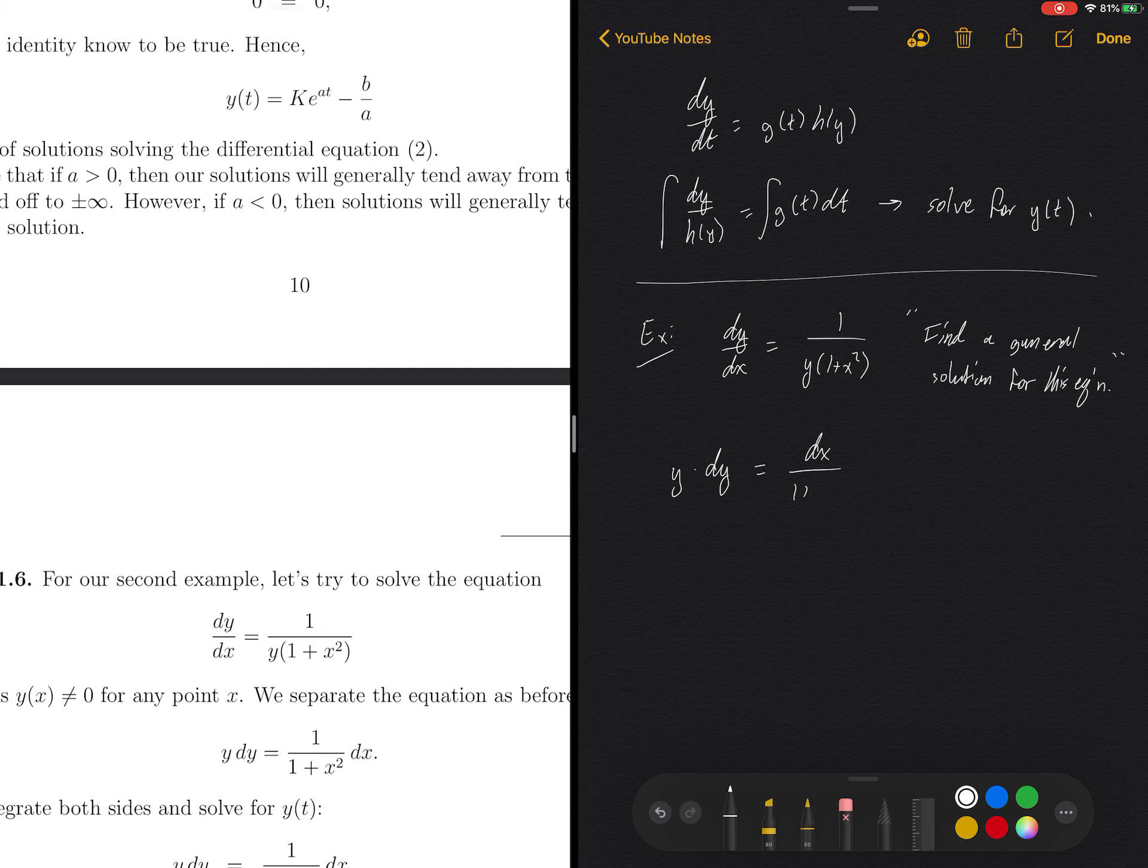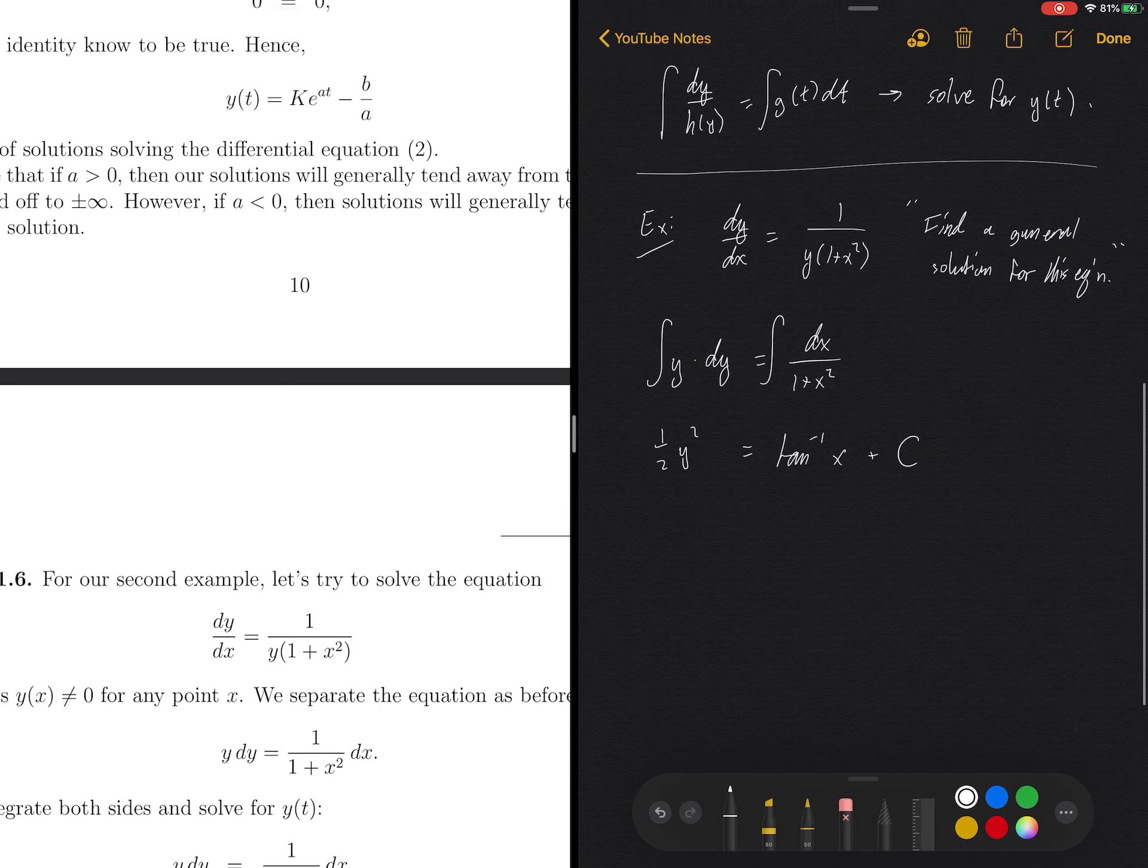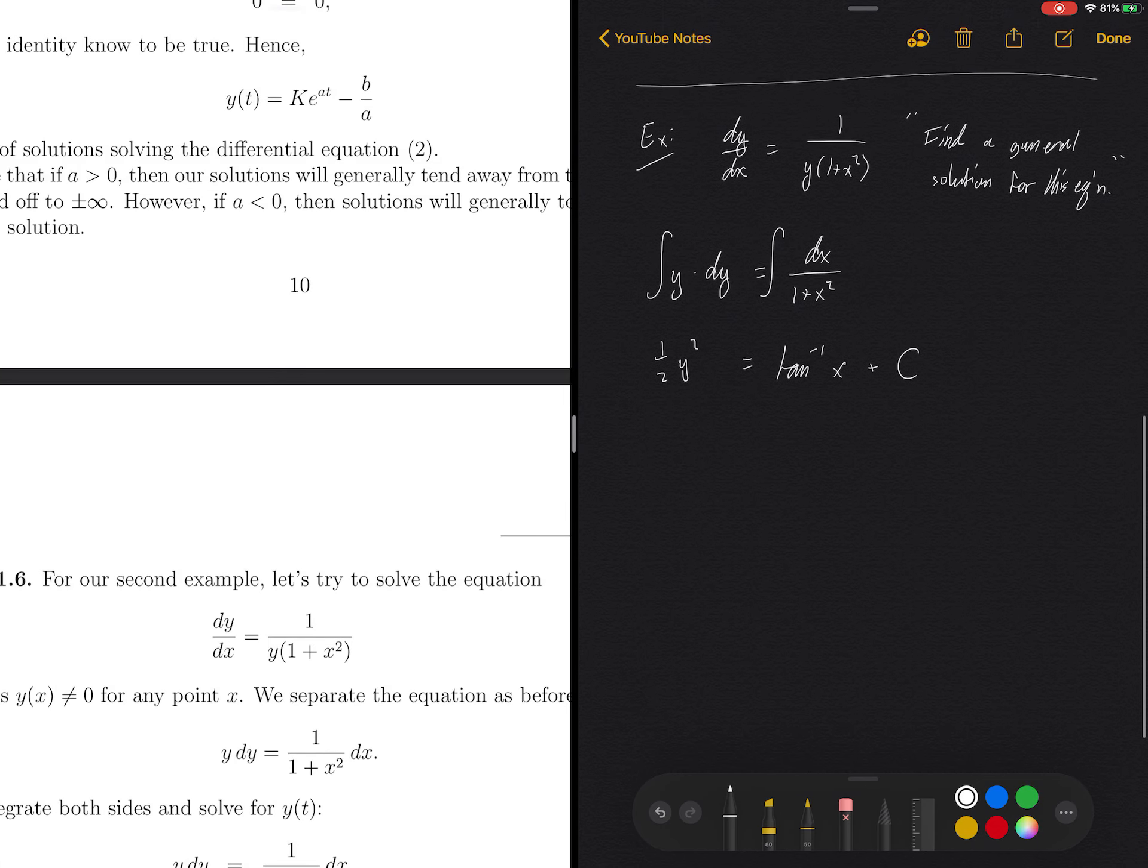So if we were to separate this out, notice that I can multiply both sides by y and I can multiply the dx over to the other side. So I get dx over 1 plus x squared. If I then integrate, then I'm just integrating y as if it was its own variable. So I got a 1 half y squared. I'm omitting the integration constant because I'm going to go ahead and put it over here with the other one on the right hand side.